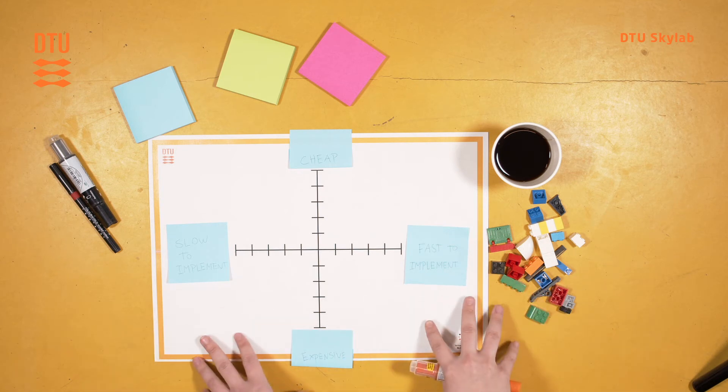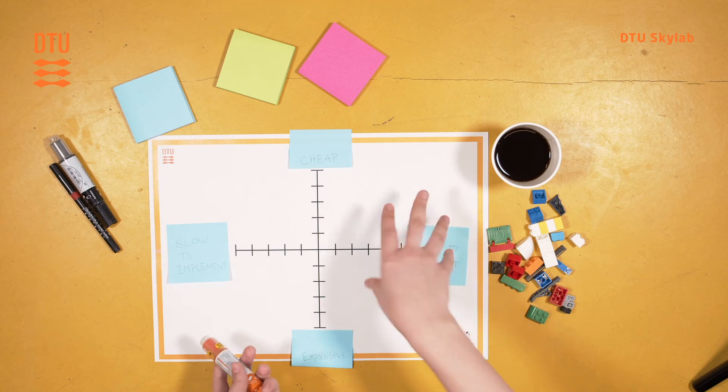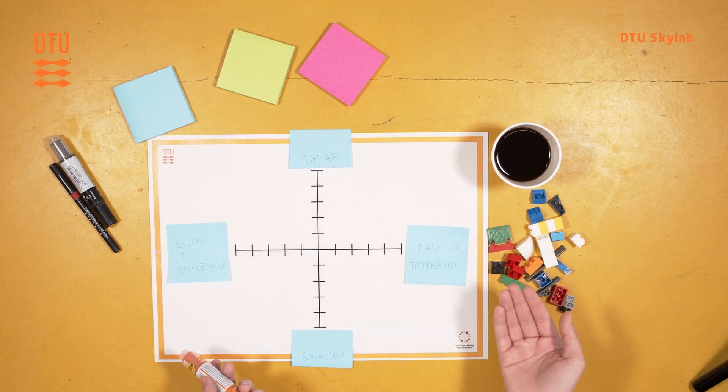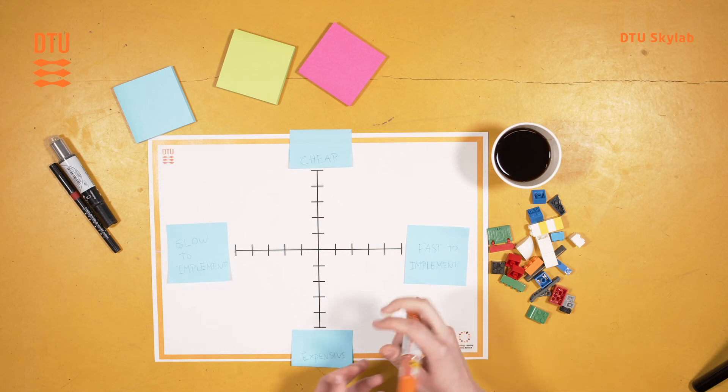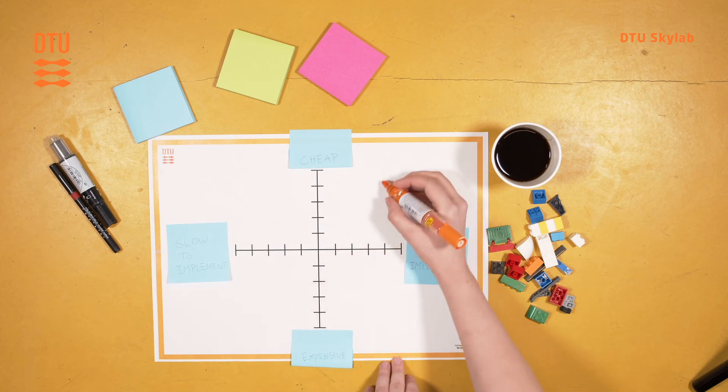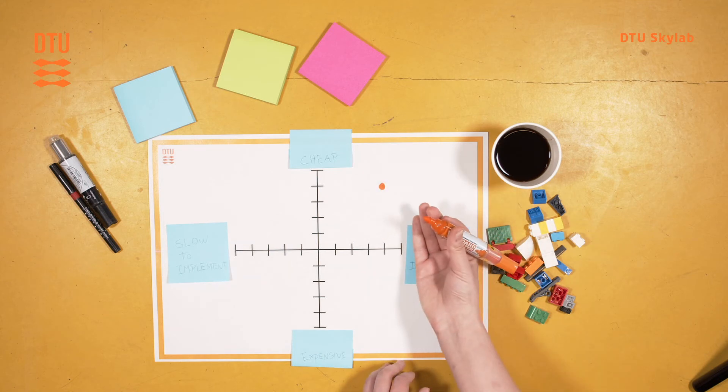So you have your criteria. Make sure that your participants know your criteria and know what they mean, and also the concept. Then through discussion in the group you agree on where this concept fits on this axis. So you might have a concept that is this fast to implement and this cheap, and you would then mark your concept here.